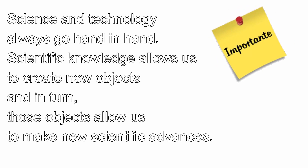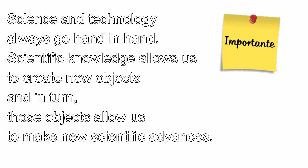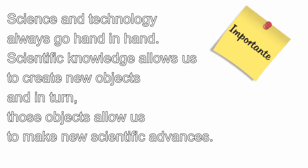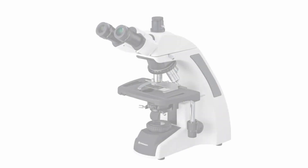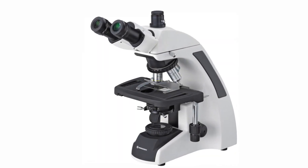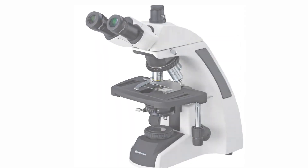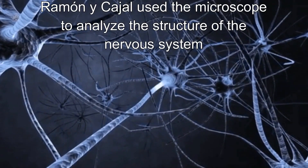Science and technology always go hand in hand. Scientific knowledge allows us to create new objects. For example, the study of optics allowed us to create better microscopes, and in turn, microscopes allowed us to make new scientific advances.